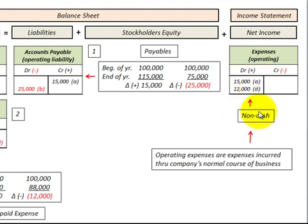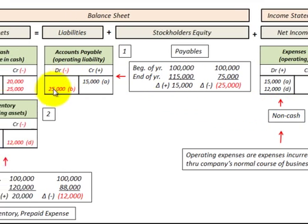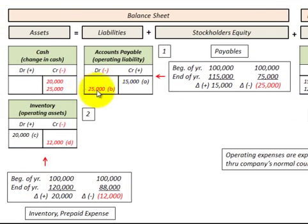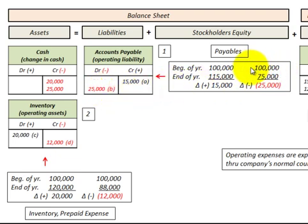Later, when we pay down on this accounts payable, we decrease the accounts payable and also decrease our cash by that amount. For example, with a beginning-of-year balance of $100,000 and an end-of-year balance of $75,000, it was reduced by $25,000 — meaning we paid $25,000 in cash.